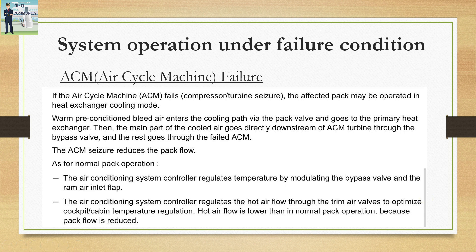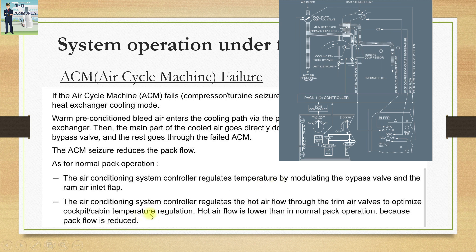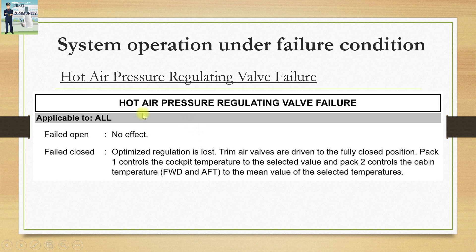Now let us see what happens when the air cycle machine fails. The ACM comprises the compressor and turbine unit. If the turbine and compressor seize, in newer aircraft the ACSC will regulate the temperature by modulating the bypass valve and ram air inlet flap — the radiator system will assist in cooling the bleed air — and the ACSC will regulate hot air flow through the trim air valves. However, since the turbine and compressor are not working, they act as obstructions, so the pack flow will be lower than normal.